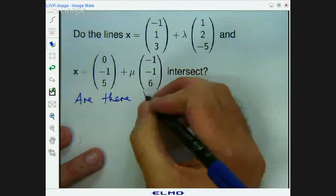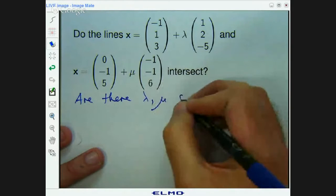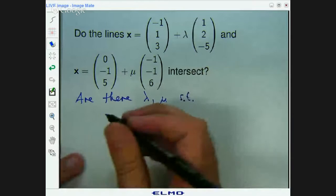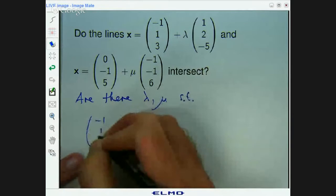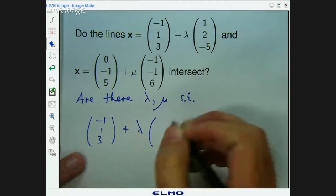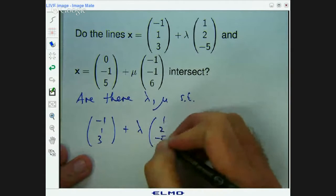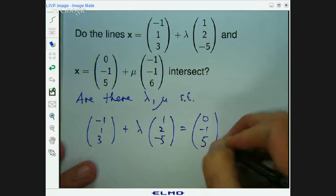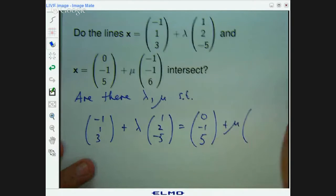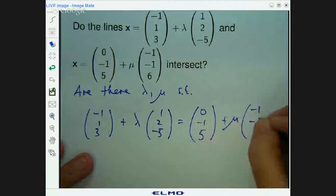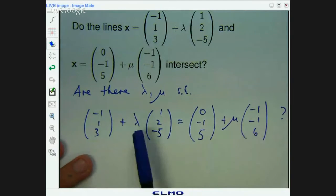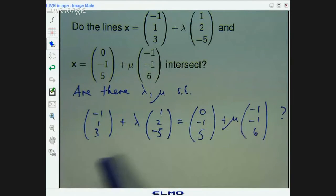Are there values of lambda and mu such that these two equations are equal? If we can find values of lambda and mu such that this holds, then they do cut or they do cross each other. If there are no values of lambda and mu, then the two lines do not intersect.